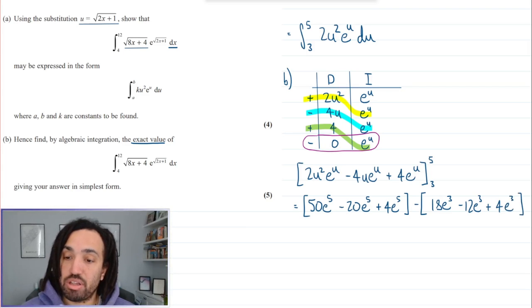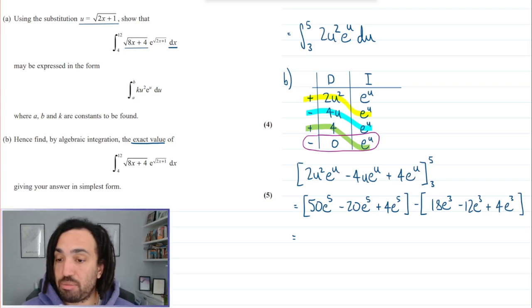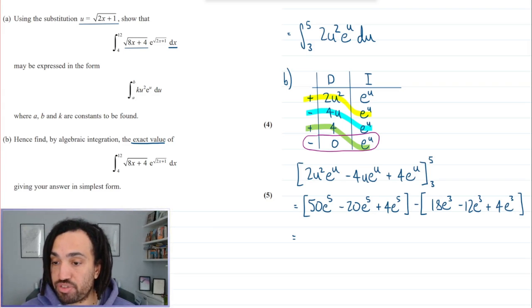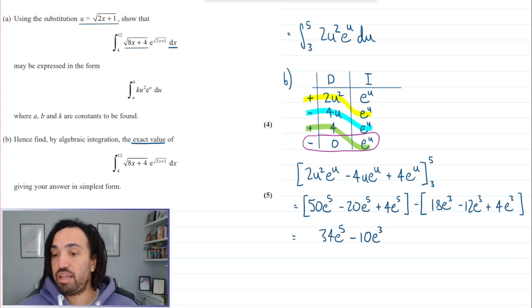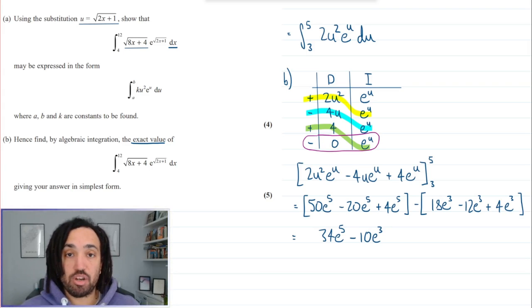So now we just need to collect up how many we have of each. So that's 34 e to the 5, and this one here will be 10 but it'd be negative so we're taking it away, so it's 10 e to the 3. And there we have it, that is the answer.